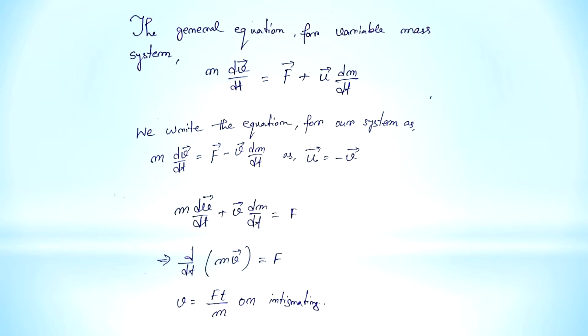So we can write m dv/dt + v dm/dt = F. We can write d/dt(mv) = F. On integrating, we get v = Ft/m, but we know m = m₀ + μt.